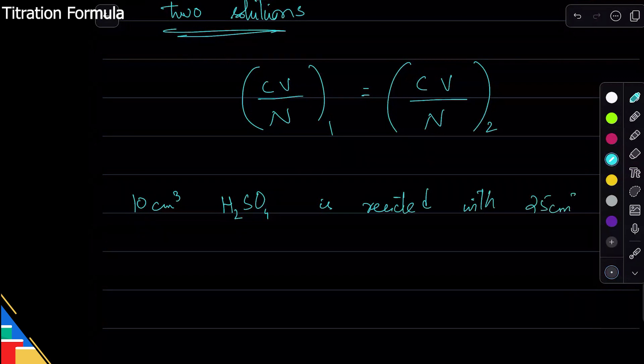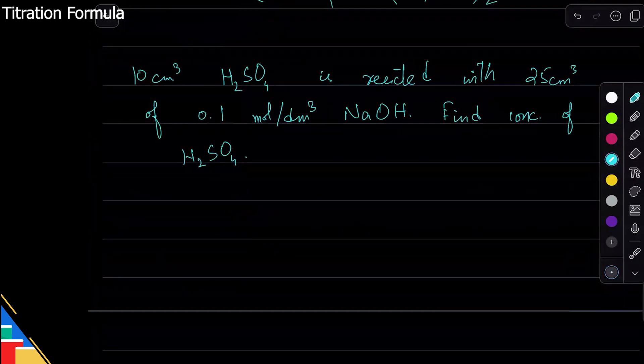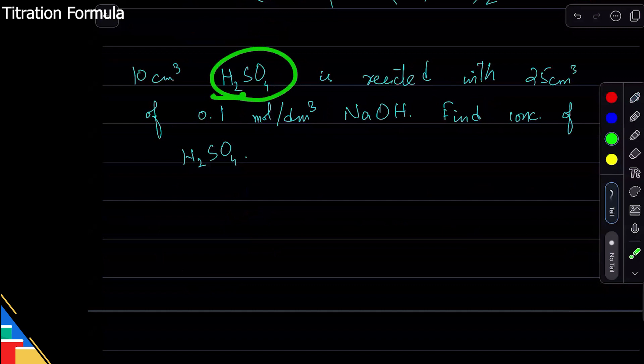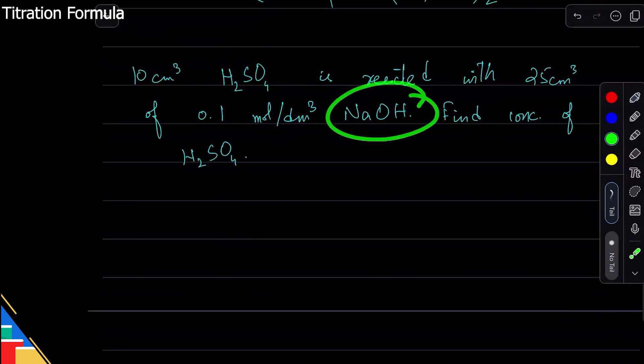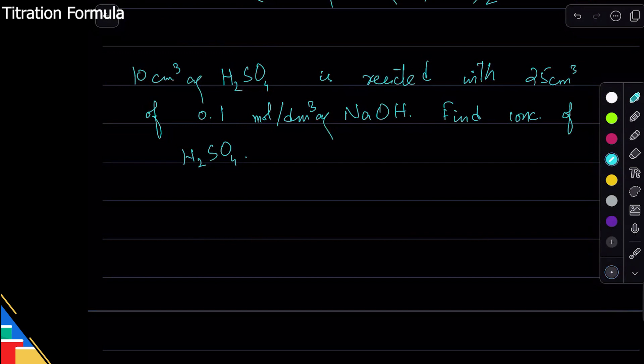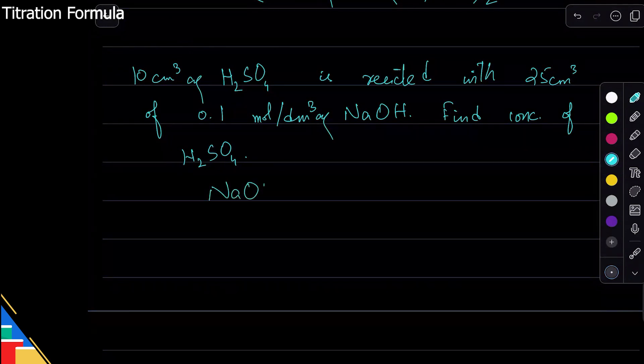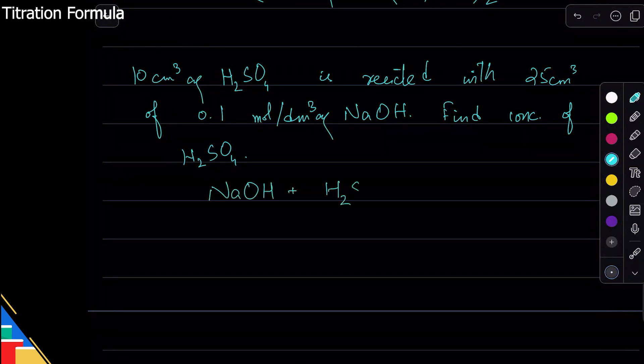...with 25 cm³. These are pretty straightforward questions. We know H2SO4 is a solution, NaOH is a solution, they're both aqueous. So I'll write the equation: NaOH plus H2SO4, they both react to get Na2SO4 plus water. This is acid-base reaction neutralization.